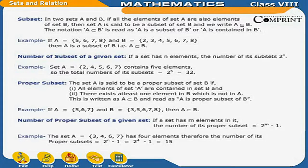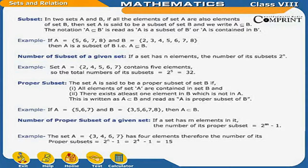Proper subset: set A is said to be a proper subset of set B if, first, all elements of set A are contained in set B, and second, there exists at least one element in B which is not in A. This is written as A ⊂ B, read as 'A is a proper subset of B'. For example, if A = {5, 6, 7} and B = {3, 5, 6, 7, 8}, then A is a proper subset of B.